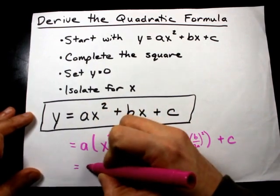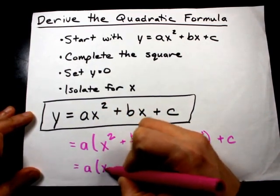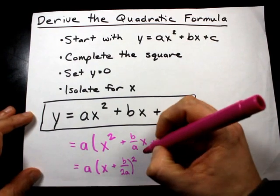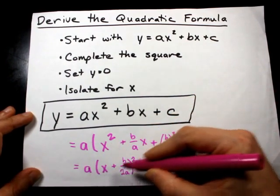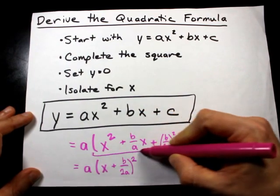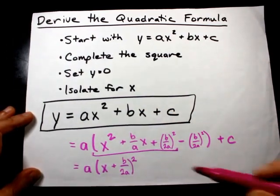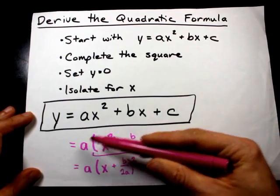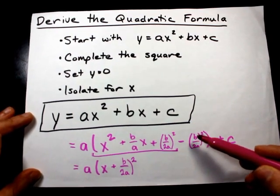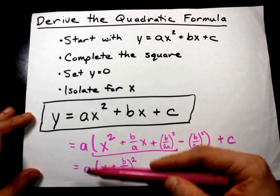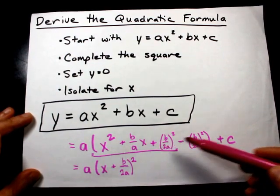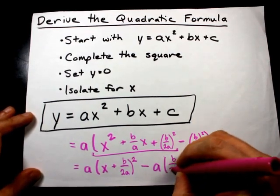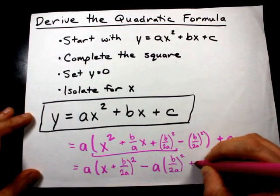I'm going to turn it into that perfect square trinomial right now. Now, x plus b over 2a all squared. This squared binomial represents these first three terms of the bracket of the first line here. I need to multiply my a by this final term in order to remove this extra bracket, because the a is being multiplied by all three of those original terms and also this one. That's going to give me minus a times b over 2a all squared plus c.